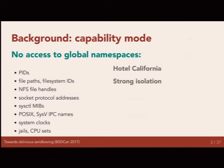This behaves like the Hotel California — you can always check in, you can never check out. Once a process goes into capability mode, it's in capability mode. If it forks, execs, does whatever, it and all of its descendants are going to remain in capability mode. This flag is set on a process credential and it's never cleared. This provides a very strong level of isolation. If a process starts and the first thing it does is call cap_enter, you have a very strong guarantee that it is not going to cause data corruption, attack other programs, or do anything malicious.